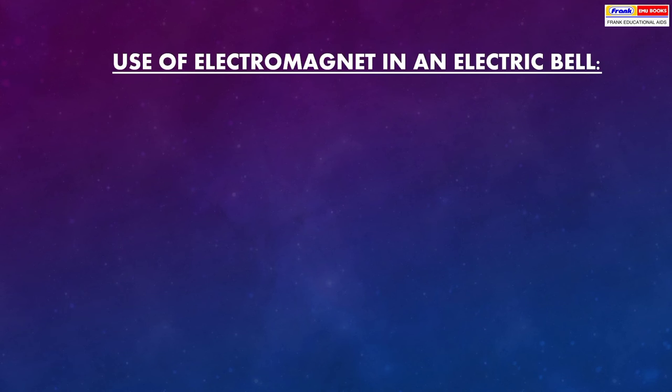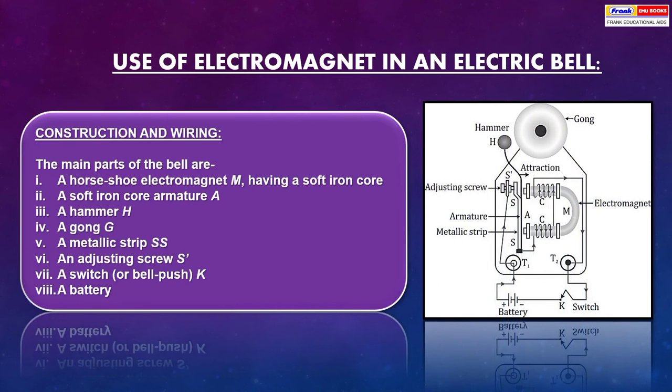Use of electromagnet in an electric bell. Construction and working: The main parts of the bell are horseshoe electromagnet M having a soft iron core, soft iron core armature, hammer, gong, metallic strip, adjusting screw, switch, and battery. Everything has been mentioned in the diagram, you can look by yourself.